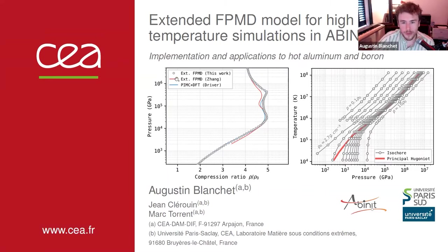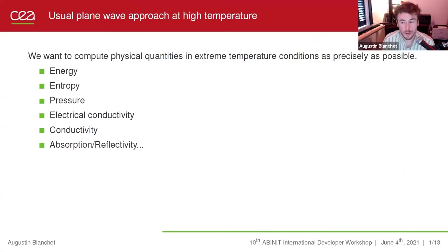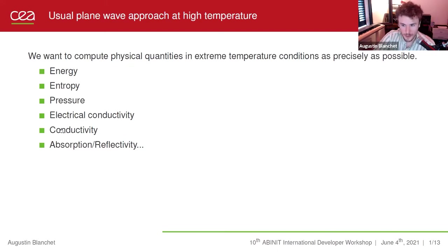I will review details of the method, implementation of it, and some practical work. To begin with basic stuff, we must keep in mind that we want to compute physical quantities in extreme temperature conditions as precisely as possible. Typically, we want to simulate matter in the plasma regime with temperatures going from 10 to 1000 electron volts, which is much higher than standard simulations in Abinit. The main quantities we are looking at are the energy, entropy, pressure, electrical conductivity, ionic conductivity, absorption or reflectivity, etc.